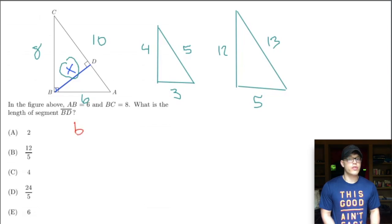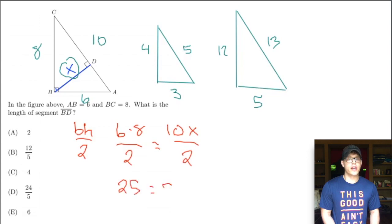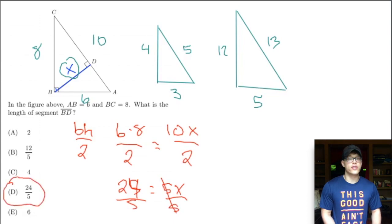We know the area of a triangle is base times height divided by 2. We can let 6 be our base, so the area is 6 times 8 divided by 2, which is 24. Or we can let 10 be our base, then 10 times our mystery x divided by 2 also equals the area. Setting these equal: 24 equals 5x. Divide by 5 and our x value is 24 fifths. The answer is D.